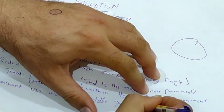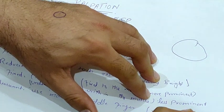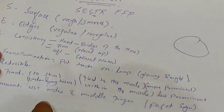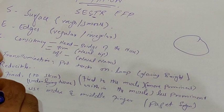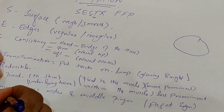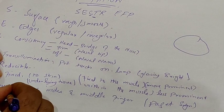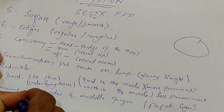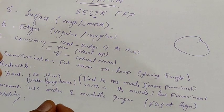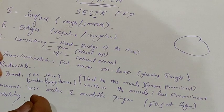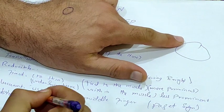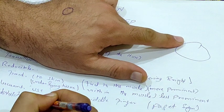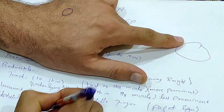P stands for pulsatility. Use the index finger of both hands, hold them on the lump, and check if it is moving up and down. If it is moving, it is pulsatile, which may suggest a vascular origin or similar conditions.